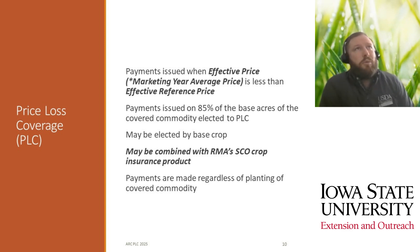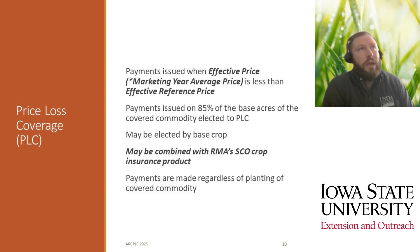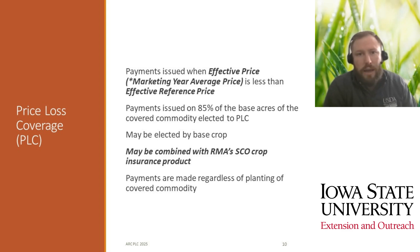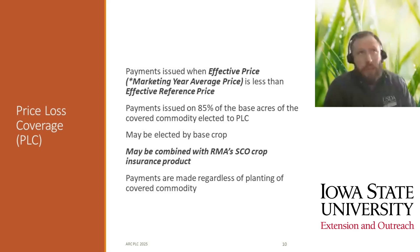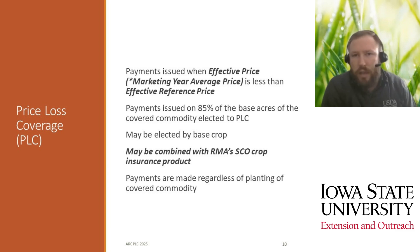For Price Loss Coverage, payments are issued when the marketing year average price is less than the effective reference price. Payments are issued on 85% of the base acres of that covered commodity elected to PLC, and you can elect that by base crop. So if your farm has bean base, corn base, oat, or sorghum base, you can elect each individual crop to PLC. PLC may be combined with RMA's SCO crop insurance product, and payments are made regardless of planting a covered commodity — so even if you're rotating crops, you're still eligible for the base crop payment.